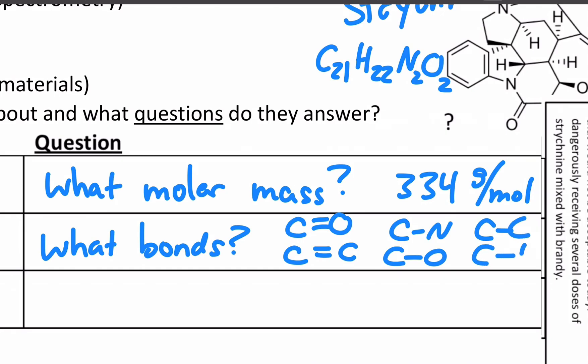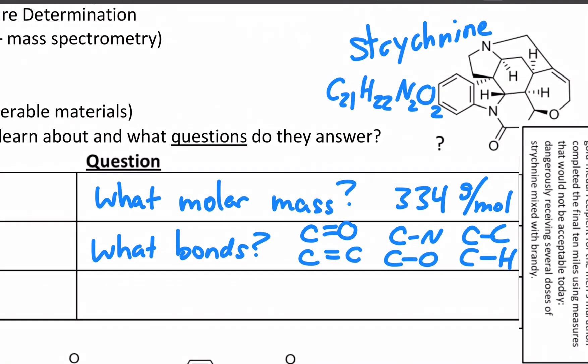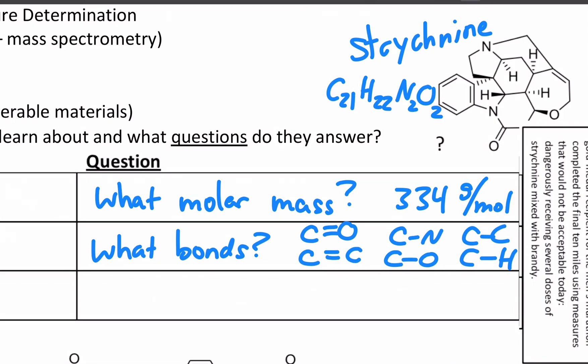And we would see those in an IR spectrum, and then we would not see things that are not there. For example, there's no OH bond anywhere in this molecule, so we would not see a stretch for that.